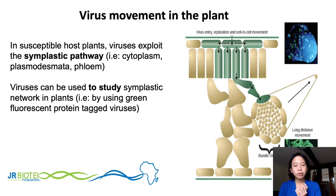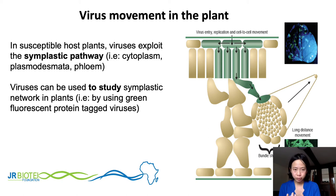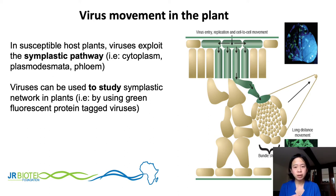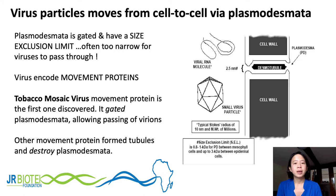Once inside the plant, how do viruses move? The majority of viruses use the symplastic pathway — the cytoplasm, plasmodesmata, and phloem. This can actually be exploited to study the symplastic network in the plant: for example, one can make viruses tagged with green fluorescent protein, as seen in the picture here, and then use them to study how the virus moves within the plant itself. Viruses move from cell to cell via plasmodesmata.